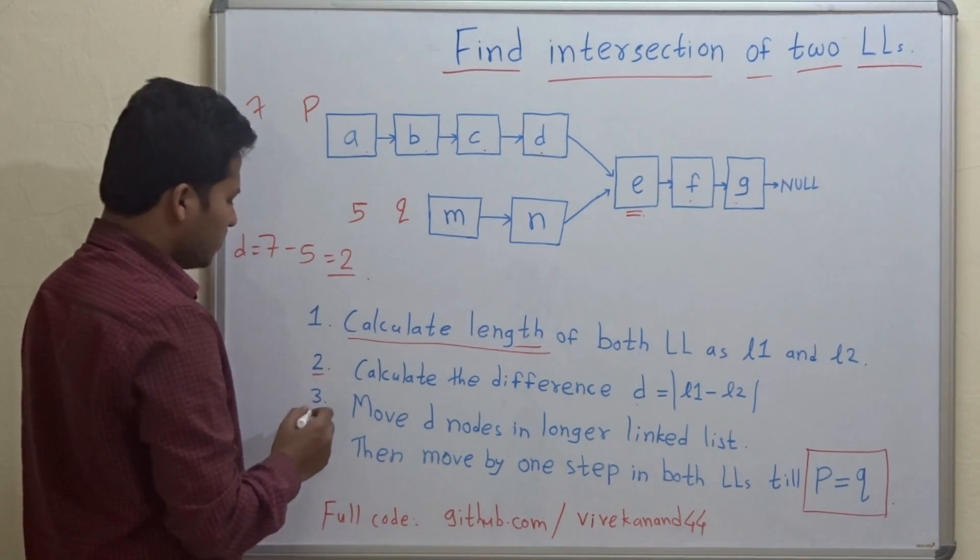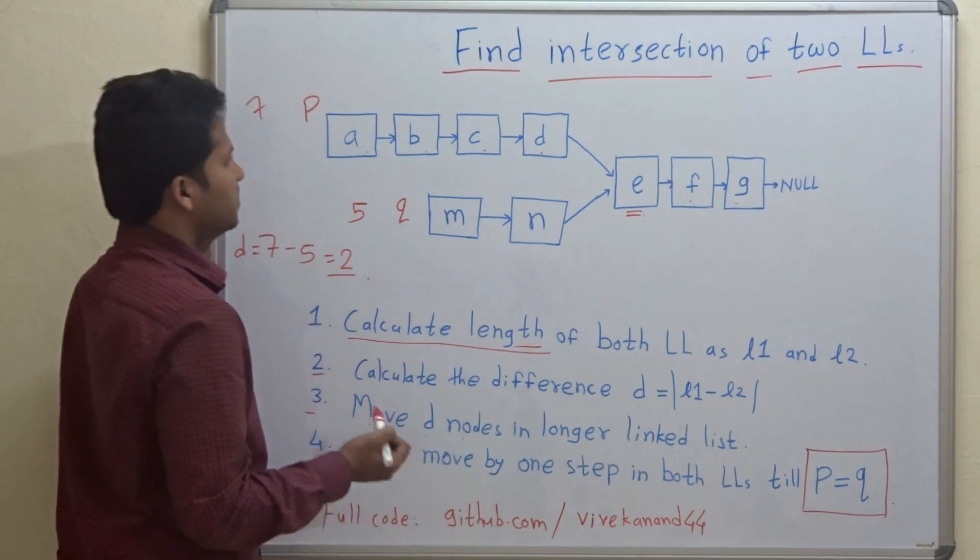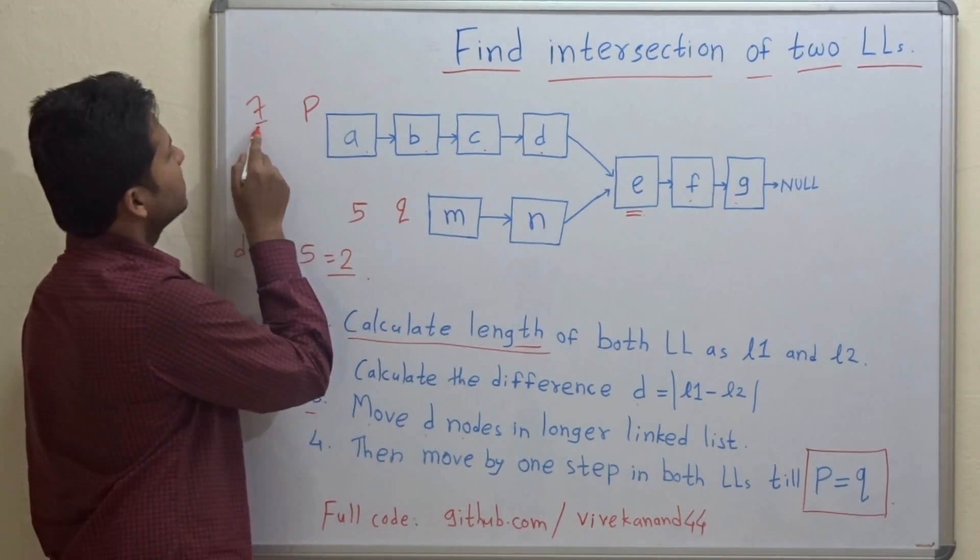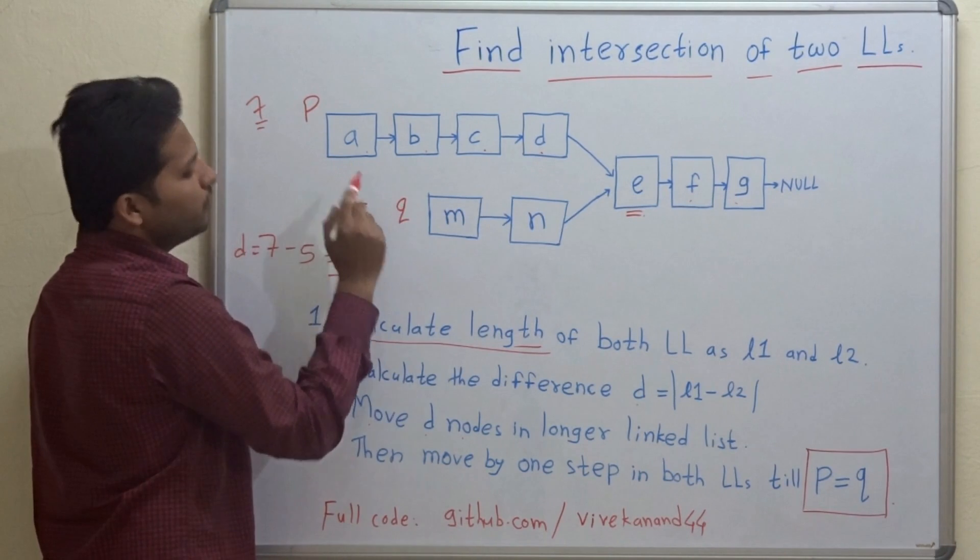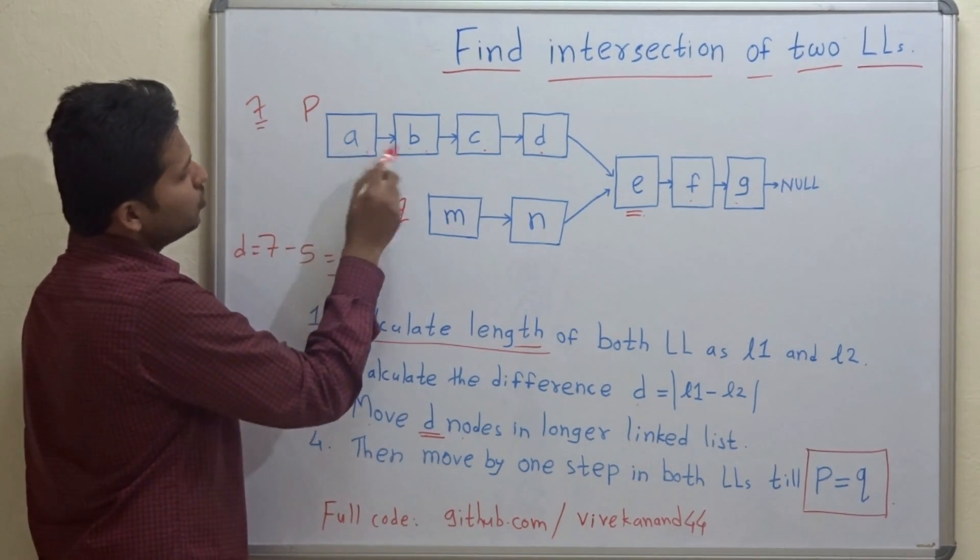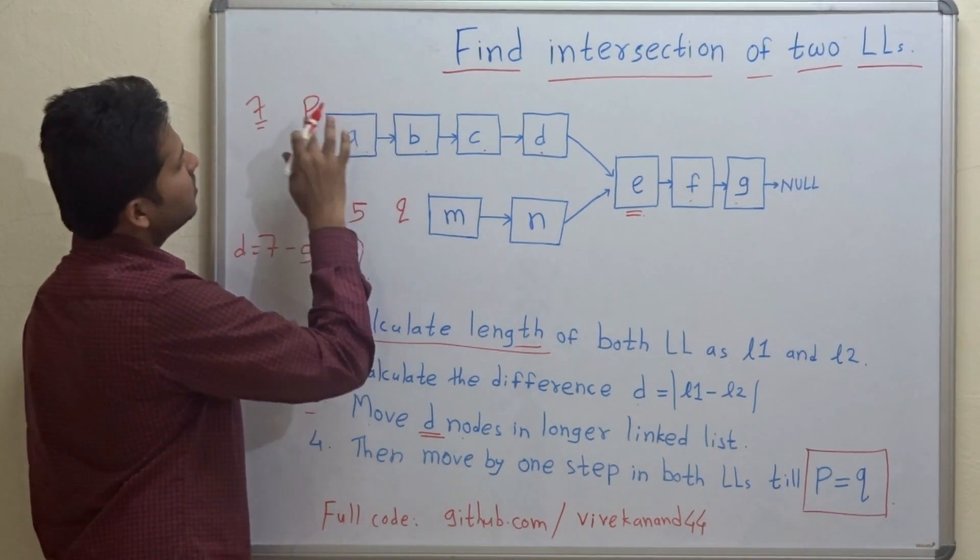Let's go to the third step. Move D nodes in longer linked list. In the longer linked list, that is of length 7, move D nodes. We have to move 2 nodes ahead because D is equal to 2. So let's move by 2 nodes ahead.